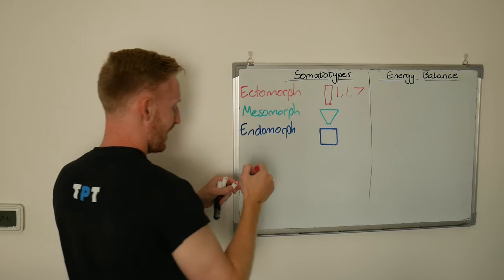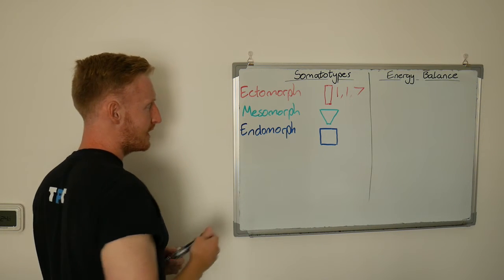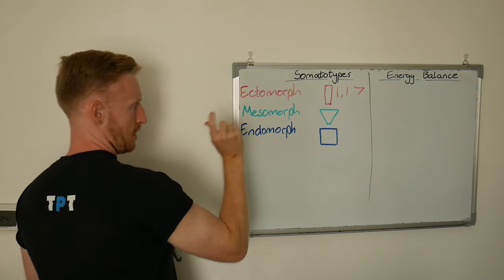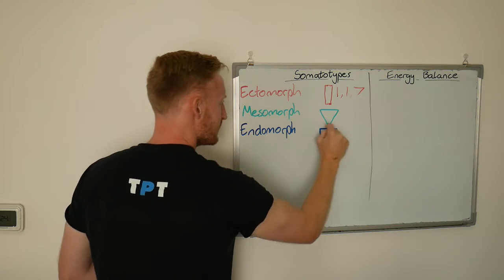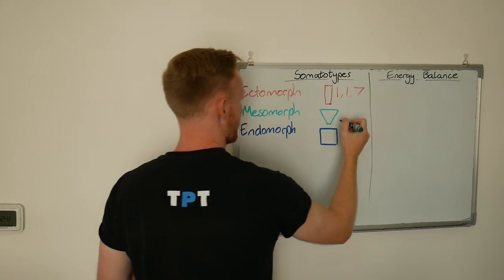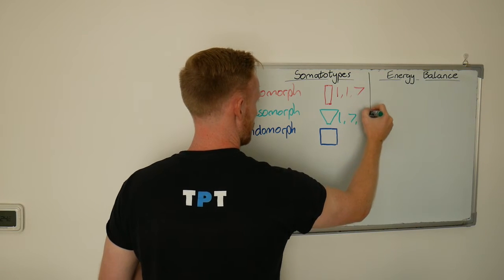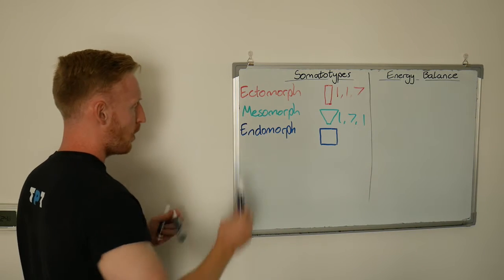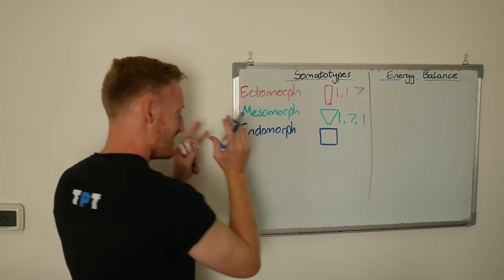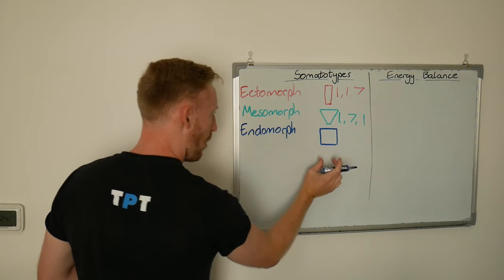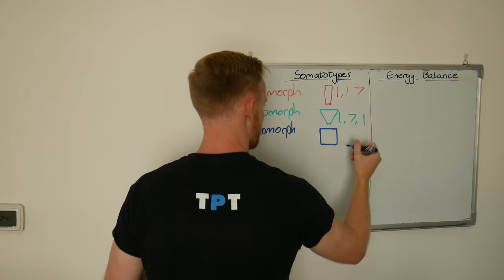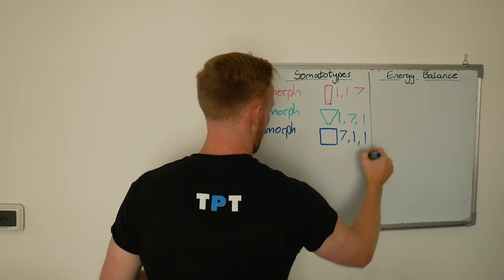If someone were an extreme mesomorph, the archetype of wide, narrow, muscular, then they would be 1, 7, 1. And then likewise for endomorph, if someone was the epitome of wide and wide, high fat mass, high muscle mass, then it would be 7, 1, 1.